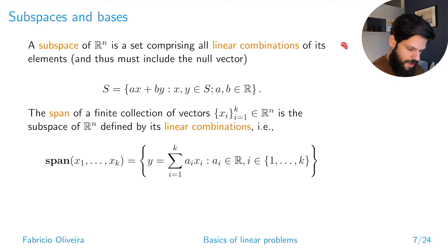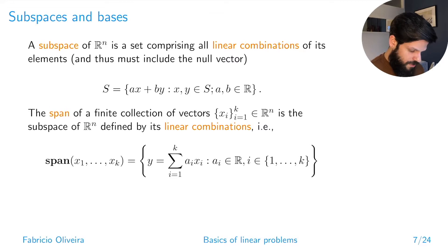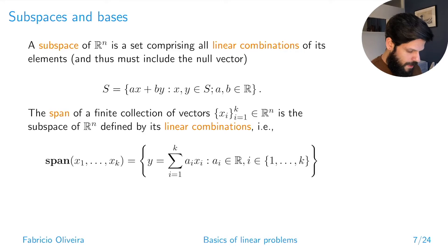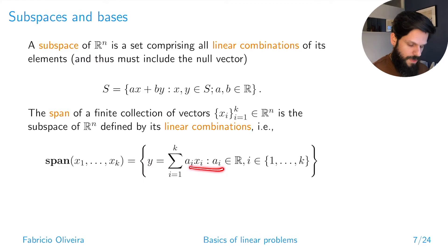Closely related to subspaces is the notion of span. The span of a finite collection of vectors x_1 through x_k is exactly the subspace in R^n defined by their linear combinations. A subspace is what you get when you look at the span of its elements. More generally, the span of k elements is all vectors y such that y equals a linear combination of the x's.